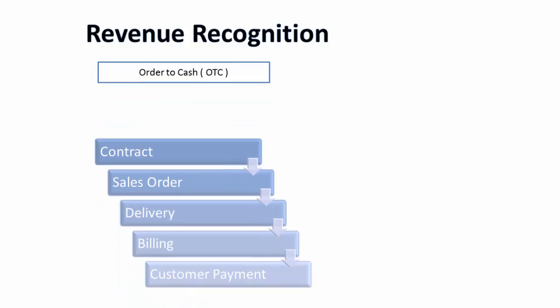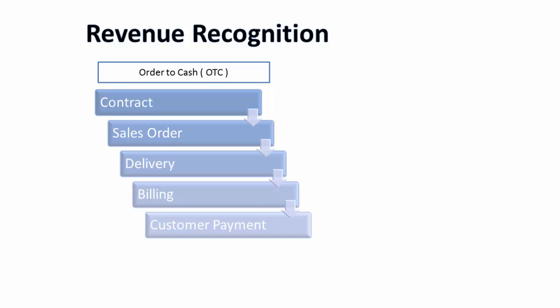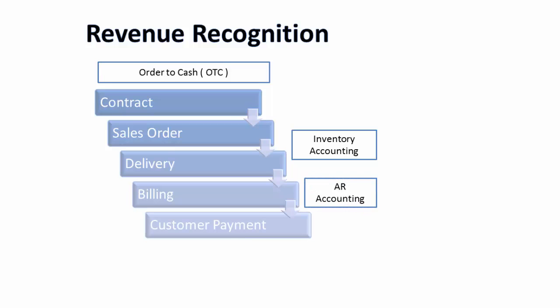In the order-to-cash process, you have contracts, sales orders, delivery, billing, and customer payment. In this entire process, we have inventory accounting at the time of delivery. If it is delivery-related or service-related, the accounting happens depending upon the service cost at the time of performing that particular obligation. In the case of billing, your customer accounts receivables is impacted, and customer payment is followed by the AR accounting.